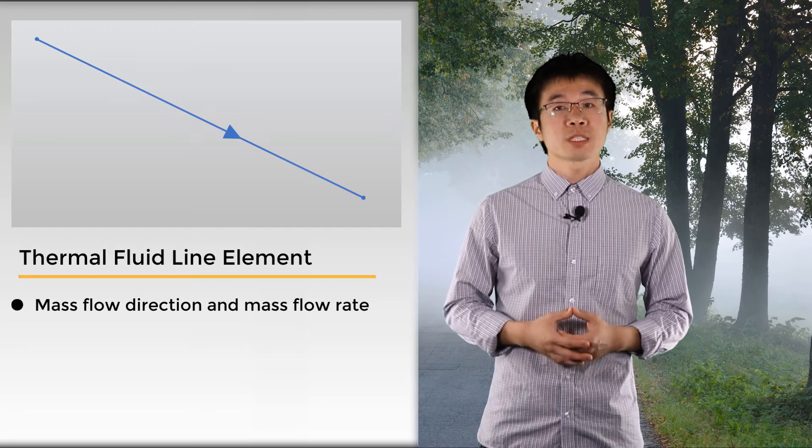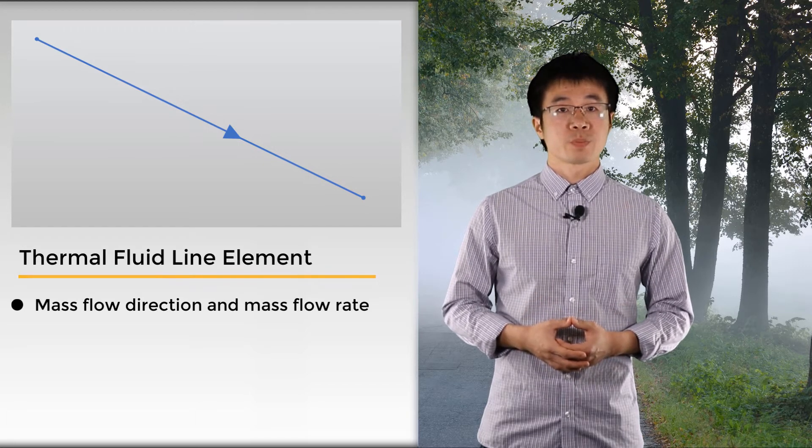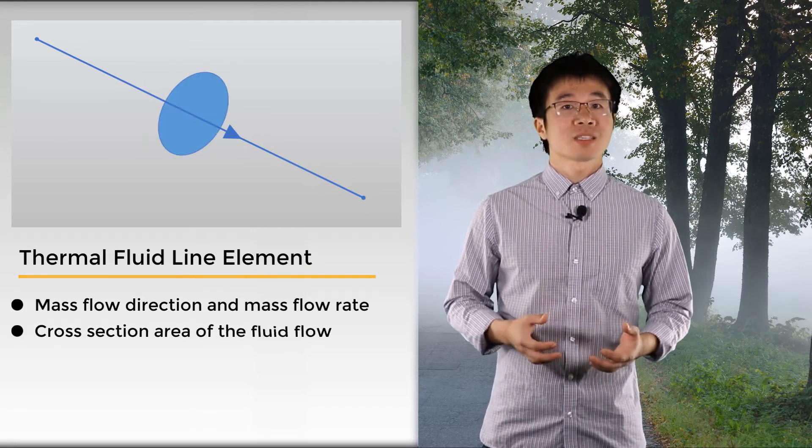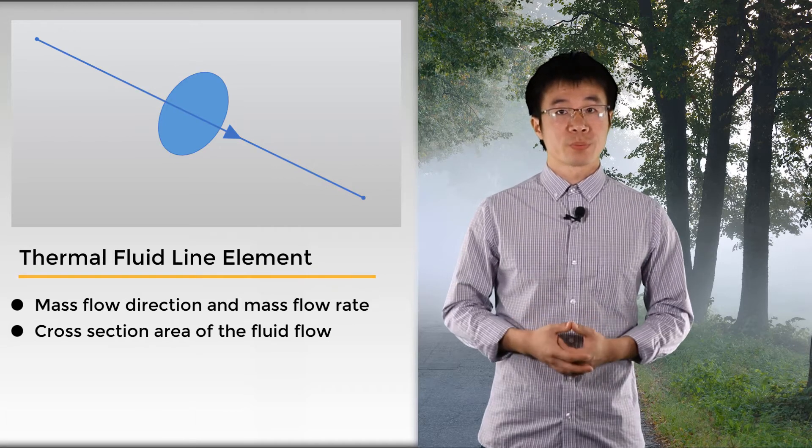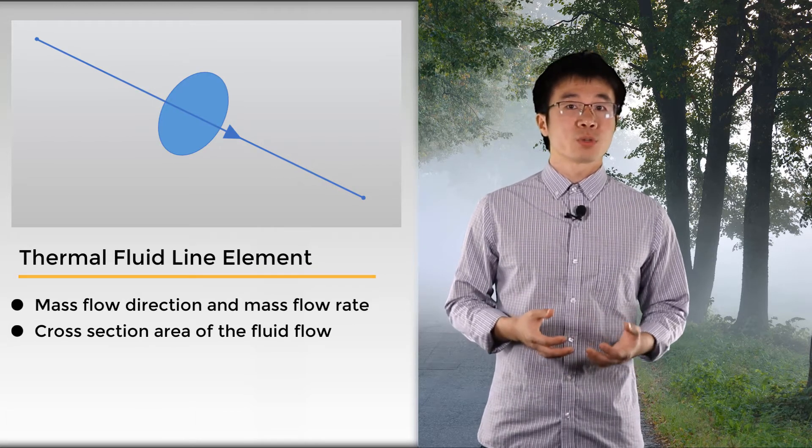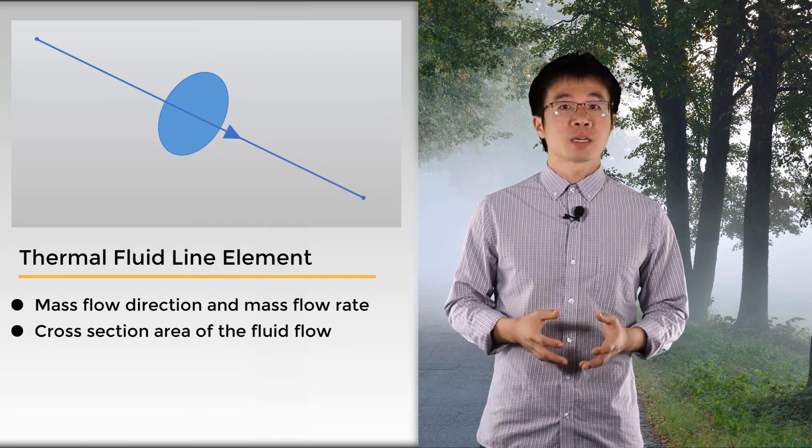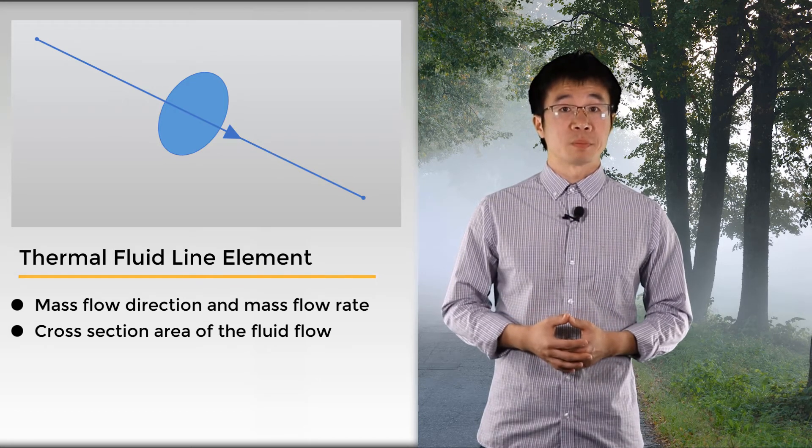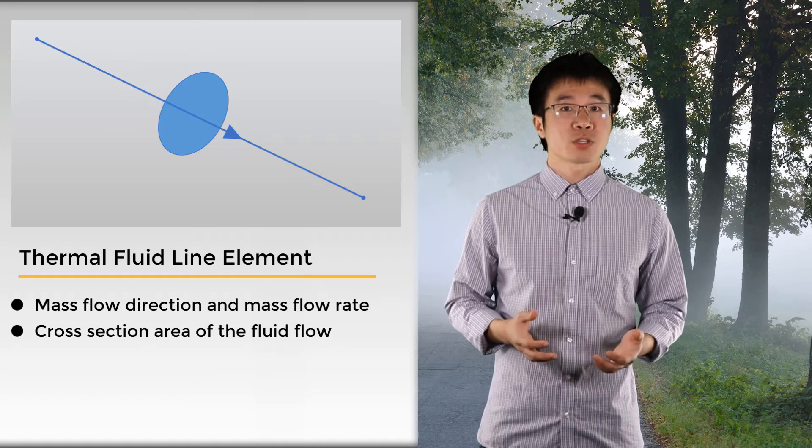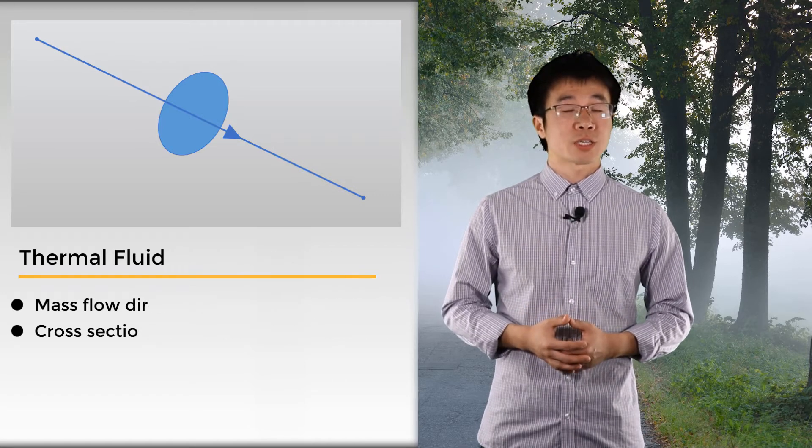As mentioned in the previous lesson, the mass flow rate will influence the film coefficient. Another input is the cross section area of the fluid flow. This is taken care of during the geometry creation stage, where the fluid line elements are geometrically created as beams, and the beam cross section is used as the flow cross section area. Other than this, we also need to define the fluid inlet temperature and the convection film coefficient with the passageway.